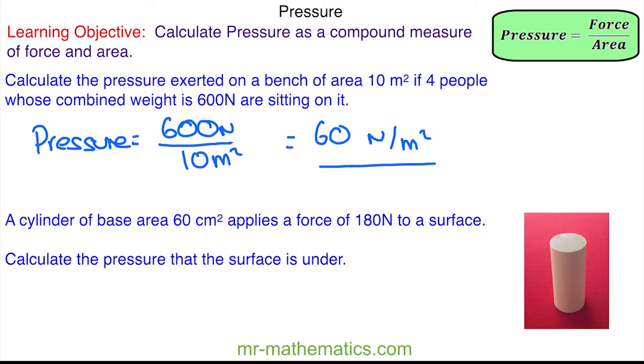In our next question, a cylinder of base area 60 cm² applies a force of 180 N to a surface. So on this surface here, you can see the cylinder is pressing down on this area, and we're asked to calculate the pressure that the surface is under.